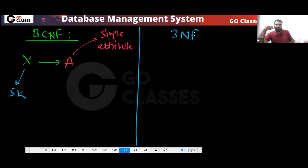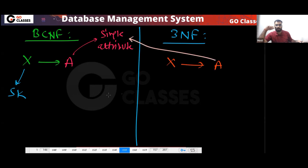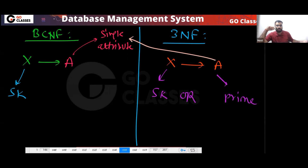And what does 3NF say? For X determining A, where A is a single attribute, 3NF says either X would be a super key, or A would be a prime attribute.